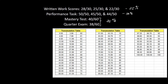Let's start by adding our written work scores. We have 28 plus 25 plus 22, which equals 75 — that's your raw score for written work. The total possible points are 30 plus 30 plus 30, which equals 90. So for written work you have 75 over 90.